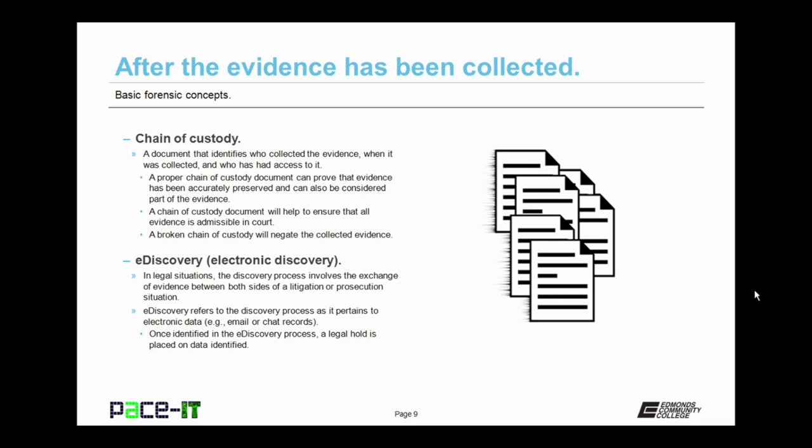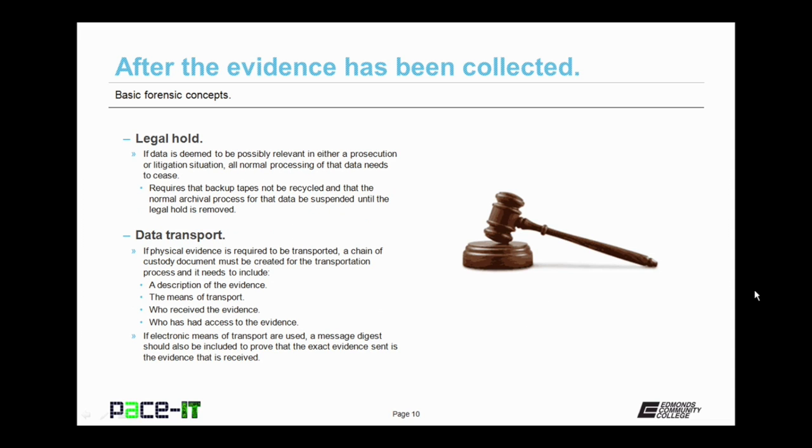So now let's talk about the e-discovery process or the electronic discovery process. In legal situations, the discovery process involves the exchange of evidence between both sides of a litigation or prosecution situation. E-discovery refers to the discovery process as it pertains to electronic data, as in email, database files, or chat records, any data that's kept in electronic format. Once identified in the e-discovery process, a legal hold is placed on the data that has been identified. A legal hold occurs when data has been deemed to be possibly relevant in either a prosecution or litigation situation. If a legal hold occurs, all normal processing of that data needs to cease. That data needs to remain in the state that it was in during the e-discovery process. So a legal hold requires that backup tapes not be recycled and that the normal archival process for that data be suspended until the legal hold is removed.